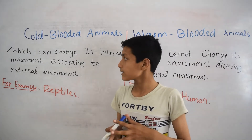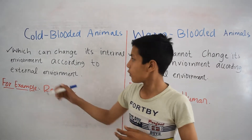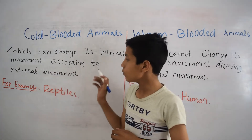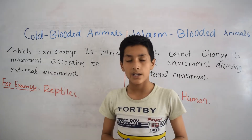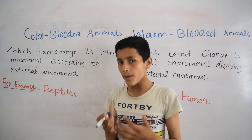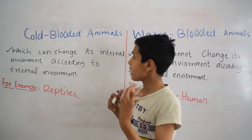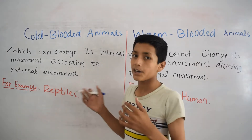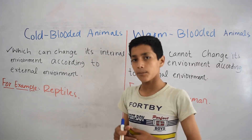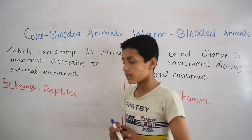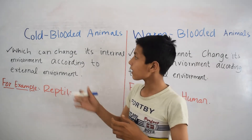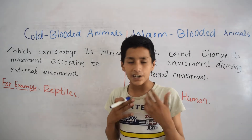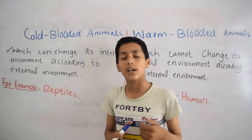Cold-blooded animals are the types of animals which can change their internal environment according to the external environment. These types of animals have the ability to change their internal environment according to the external environment. For example, reptiles. So reptiles are cold-blooded animals because reptiles can change their internal environment according to the external environment.